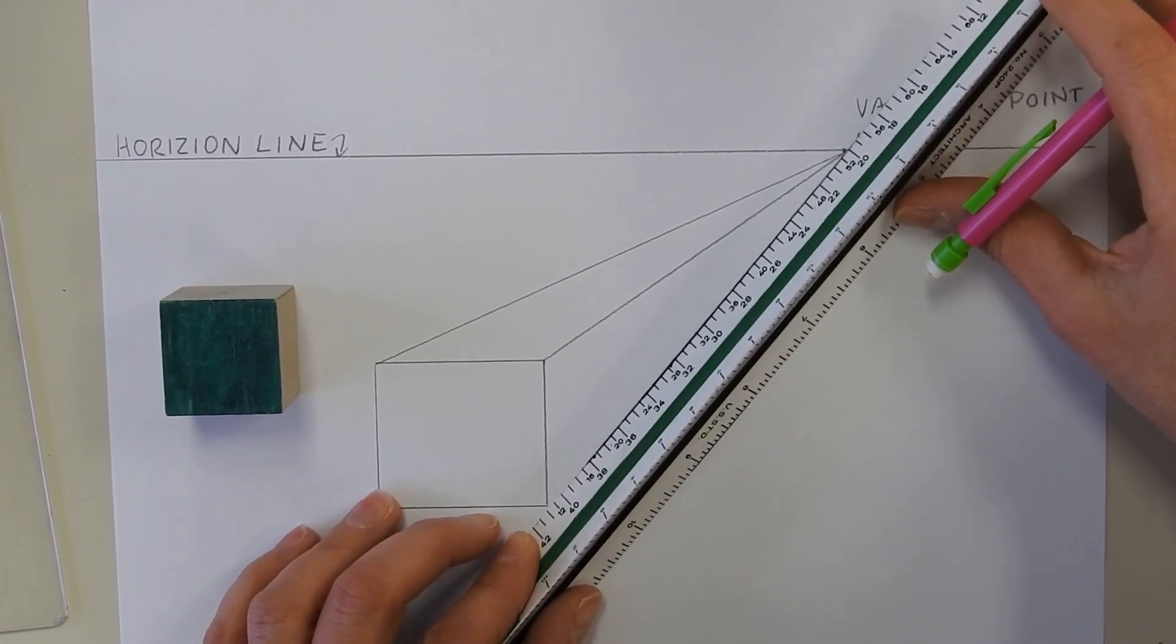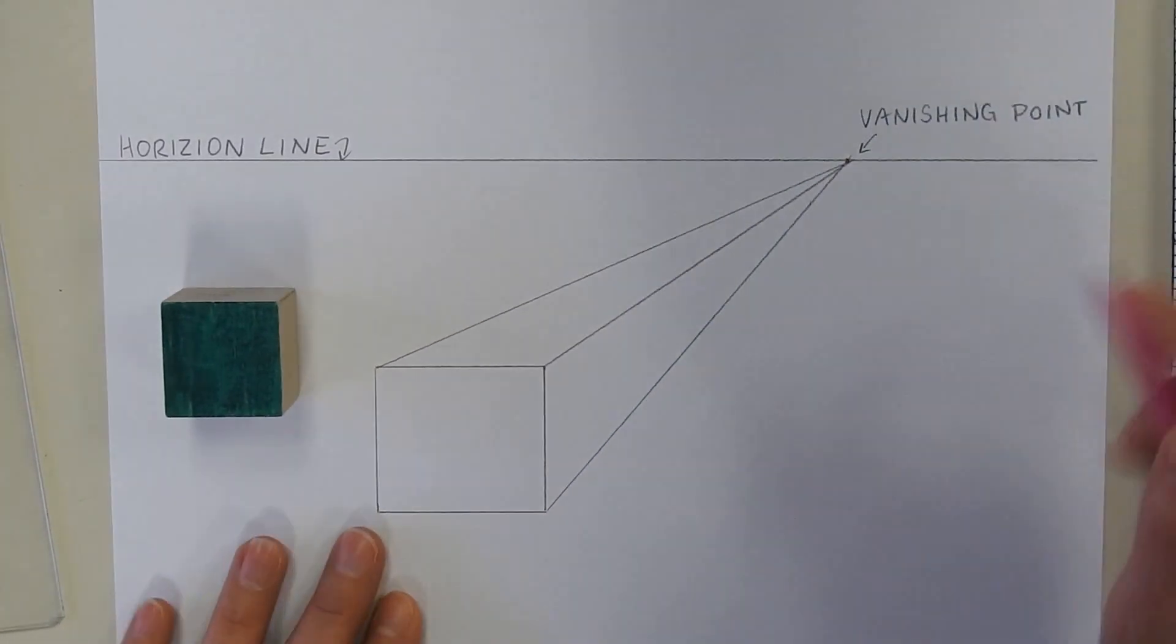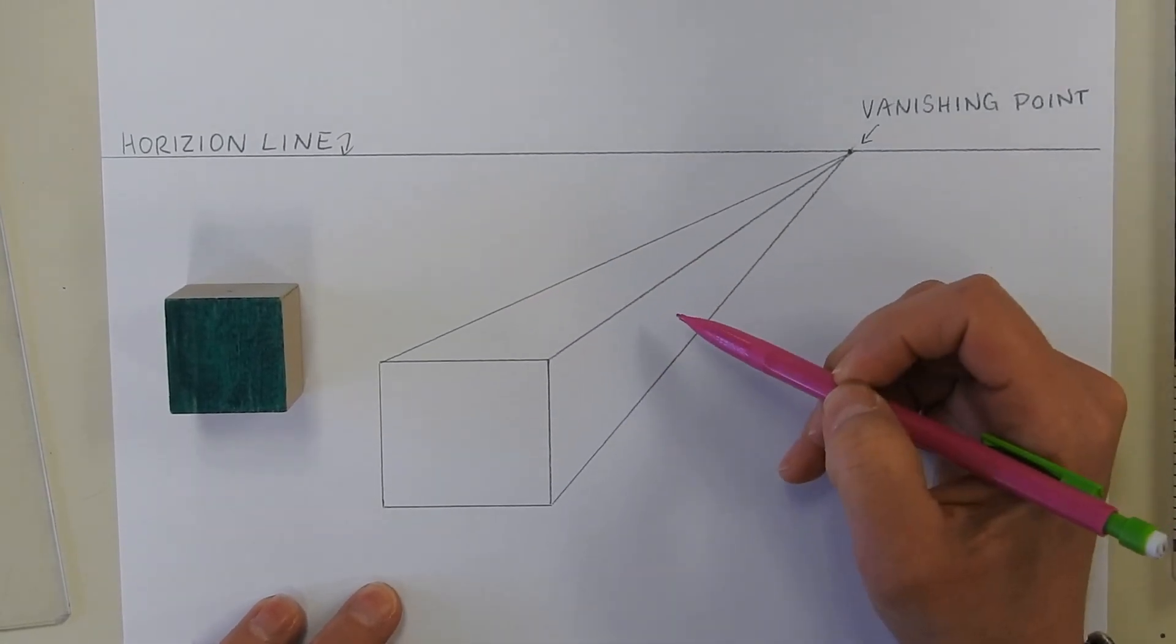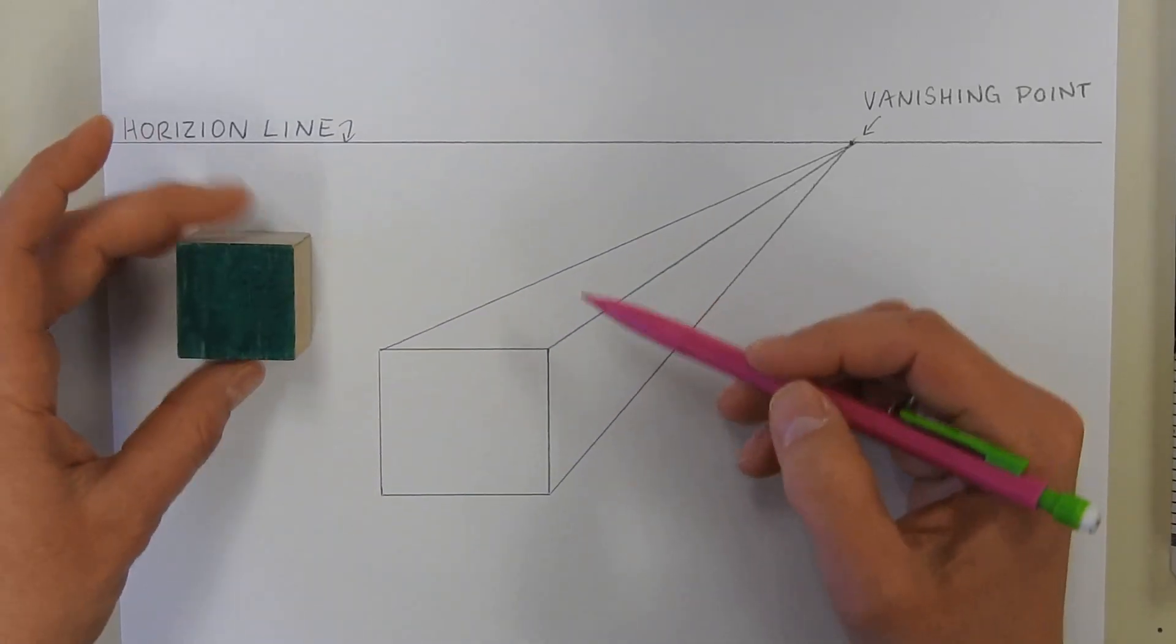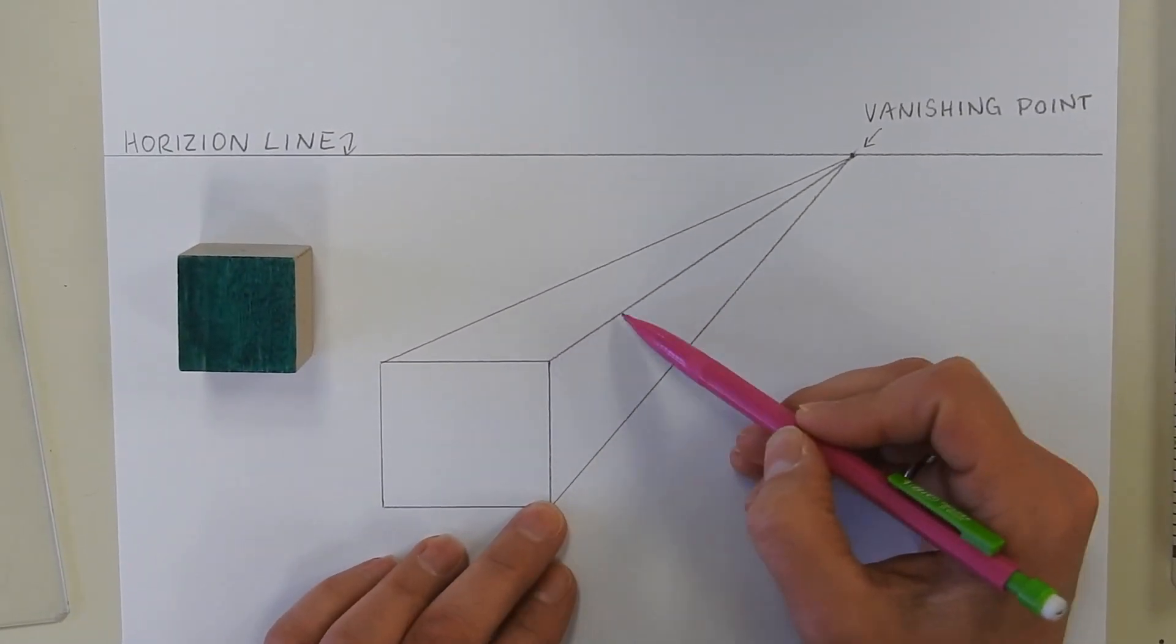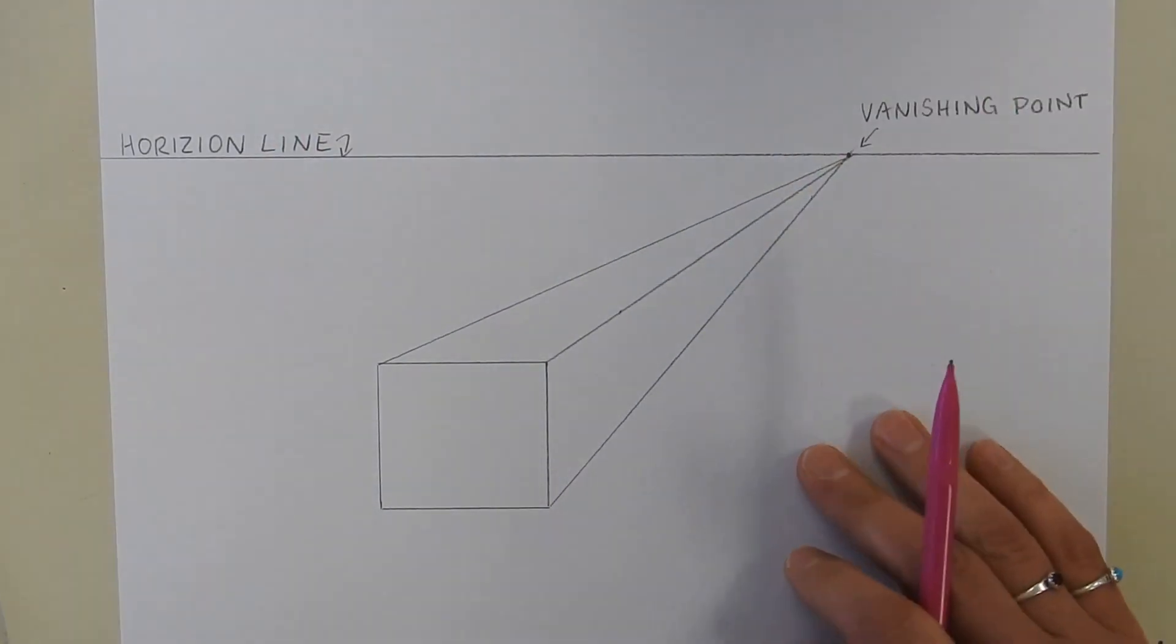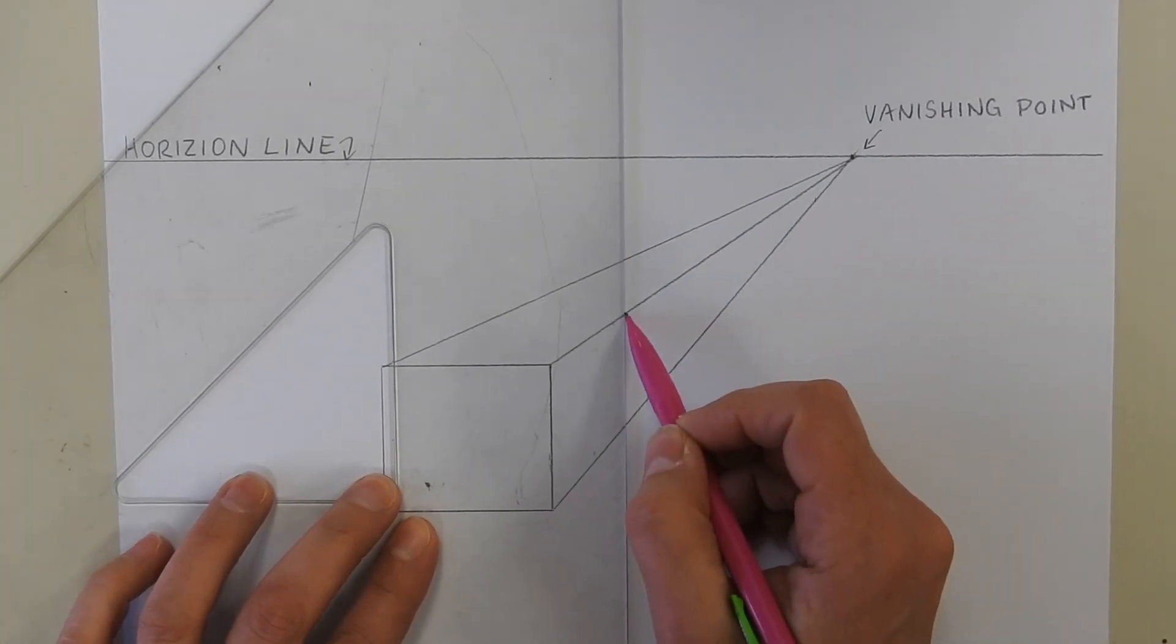So once we have these three lines, then we go in and cut off the cube to the size that we want. Now this cube is equal in all of its sides, so on here I'm just going to estimate a little bit about right there. And I'll use my triangle to make that line.